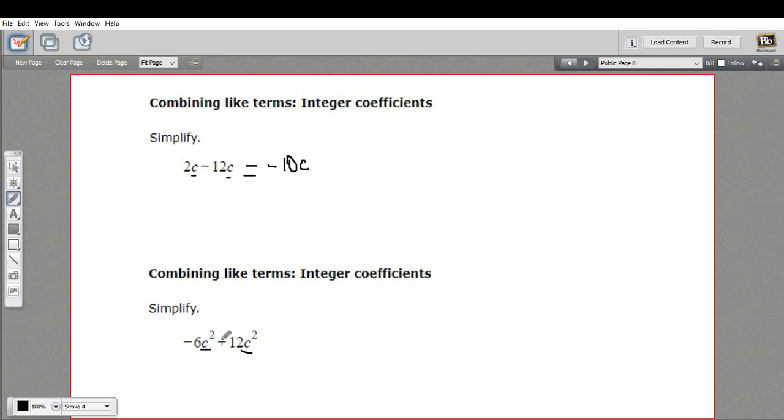The exponent makes a difference. So if you had, let's say, 2 C plus 3 C squared, you could not combine those. Those are not like terms.